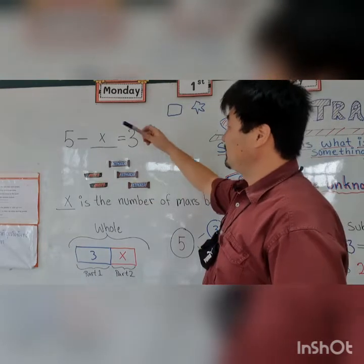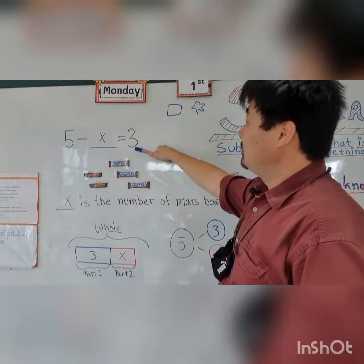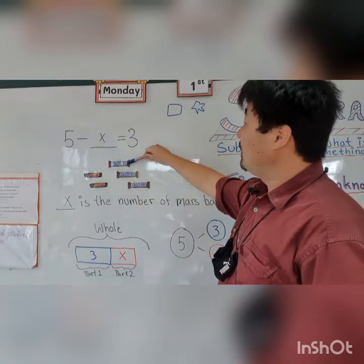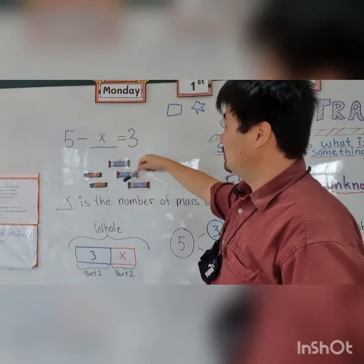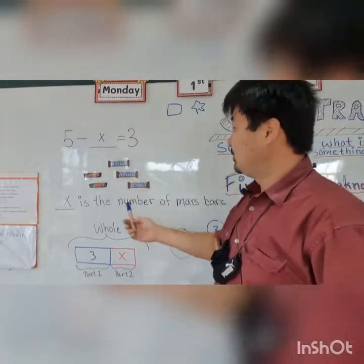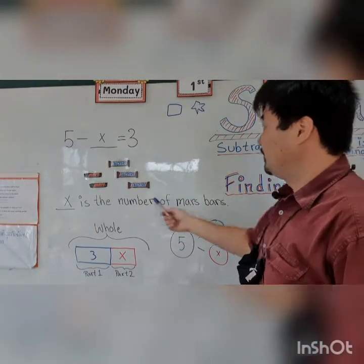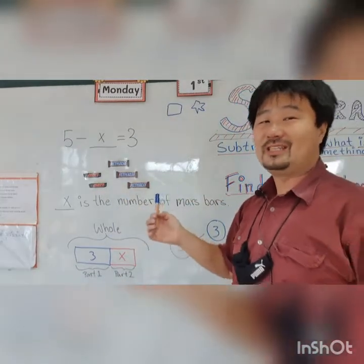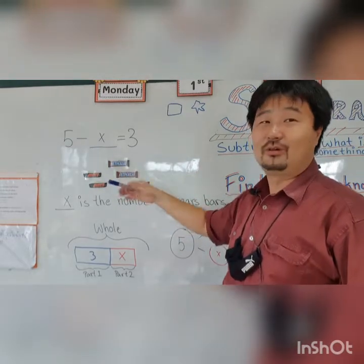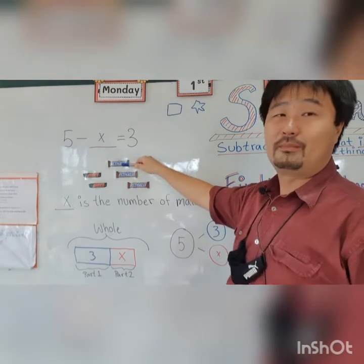So let's count them: one, two, three, four, five — the total is five. And then equals three. So five minus X equals three. One, two, three — those are three Snickers bars and Mars bars. So here X is the number of Mars bars. It's very easy to count what X is because now you are visualizing it. I'm letting you visualize it by using flashcards.